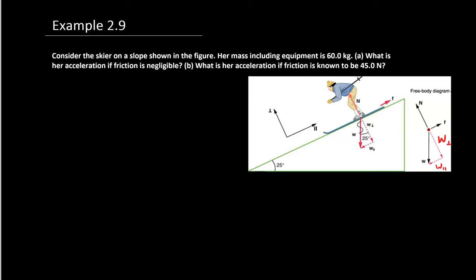As you see, we have a skier on a slope. Her mass is 60 kilograms, and for part A, we want to know what is her acceleration if friction is negligible.